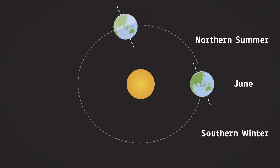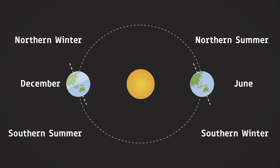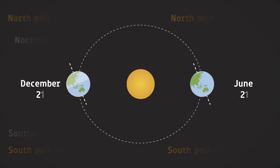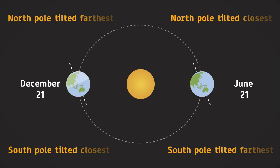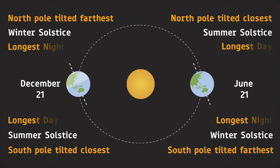Conversely, around December, the northern hemisphere is tilted away from the Sun, thus experiencing winter. These extremes, when the poles are either farthest or closest to the Sun, are called solstices, when we have the longest days or nights.